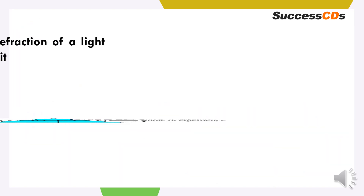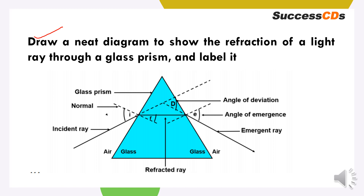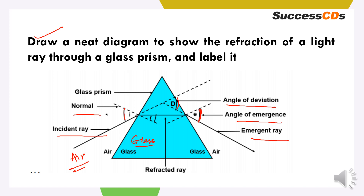The next question asks us to draw a neat diagram to show the refraction of a light ray through a glass prism and label it. So this is the glass prism — we have the normal here, this is the incident ray, this is the angle of deviation, this is the emergent ray, and the angle of emergence. Apke jitne bhi diagrams mein likhenge, usko achi tarah se label karna hoga — angle of deviation, angle of emergence, normal, incident ray, emergent ray, aur medium bhi dikhana padega, jaisi yahan pe glass dikhaya hai.